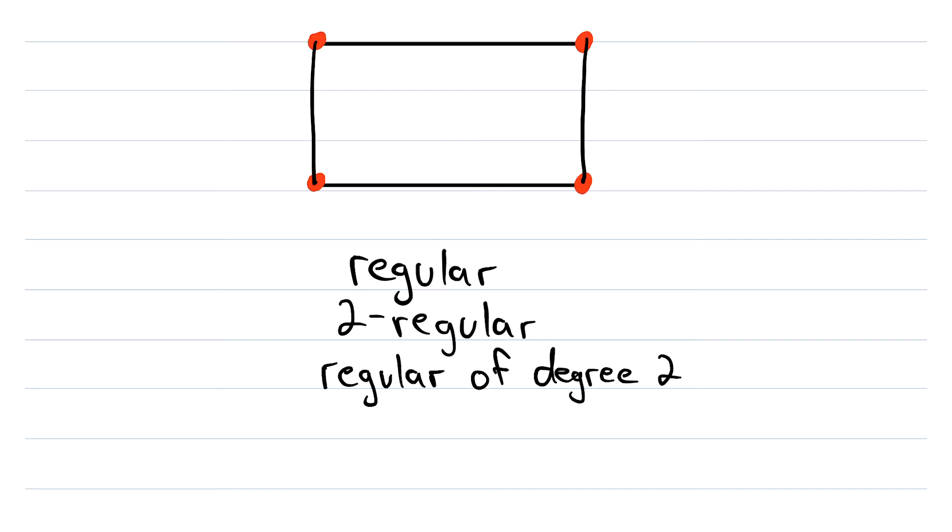Now, how about a 3-regular graph? That would be cool. Think we can find one of those? We absolutely can. Check it out. Just have to join these two vertices here and join these two vertices here with that super straight line there. So, this graph is 3-regular, because every vertex in the graph has degree 3.